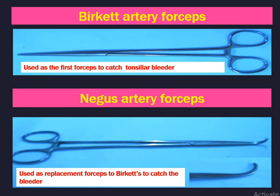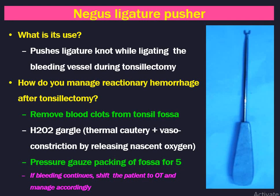Next is Bricket artery forceps — used as straight forceps to catch bleeders during tonsil dissection. Nowadays we don't use these forceps most of the time as there is very little bleeding after tonsil surgery. Negus artery forceps are used as right-angled forceps to catch the bleeder. The bleeder is initially caught with the straight forceps, then the Negus artery forceps is applied at the base. The bleeder is then tied with the Negus ligature pusher, which is used to push the ligature knot while ligating the bleeding vessel during tonsillectomy.